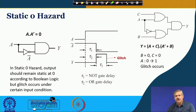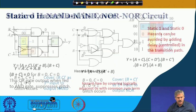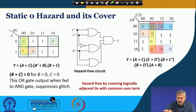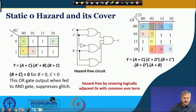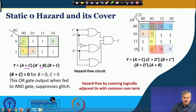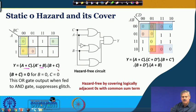Going back to that circuit — we found there is a possibility of a glitch, and we are covering this particular hazard. The two existing terms are a-plus-c and a-prime-plus-b, and the common term to add is b-plus-c. So we form this group; the b-plus-c term is a so-called redundant term in terms of the optimization problem, but together it solves and addresses the Static-0 Hazard.